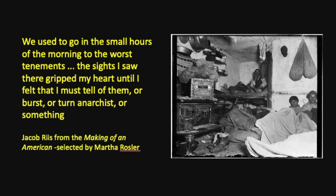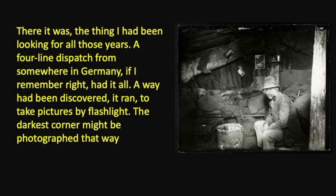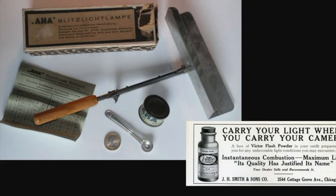This is a quote from Riis selected from Rosler's book: 'We used to go in the small hours of the morning to the worst tenements. The sights I saw there gripped my heart until I felt that I must tell of them or burst or turn into an anarchist or something.' What you notice in these photographs is that these people were sitting in dark rooms. And here's another Riis quote: 'There it was. The thing I had been looking for all those years. A four-line dispatch from somewhere in Germany, if I remember right, had it all. A way had been discovered to take pictures by flashlight. The darkest corner might be photographed that way.' It's clear that at a certain level Riis was literally intruding on these people's lives, flashing this powder in their face as they were sitting in a darkened space.